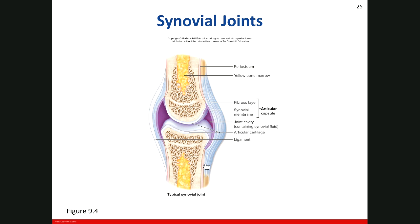Inside the joint, numerous sensory nerves innervate the articular capsule and associated ligaments. These sensory nerves detect painful stimuli and report on the amount of movement and stretch at the joint. By monitoring stretching, the nervous system can detect changes in posture and adjust body movement. Synovial joints also contain blood vessels that provide oxygen and nutrients and remove waste.